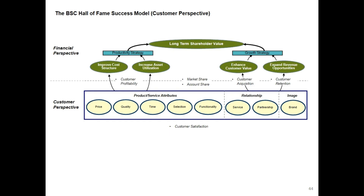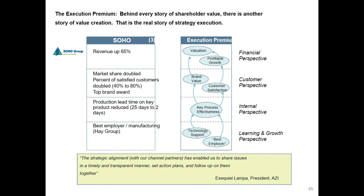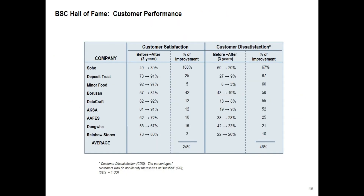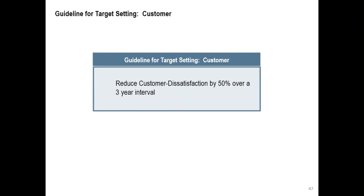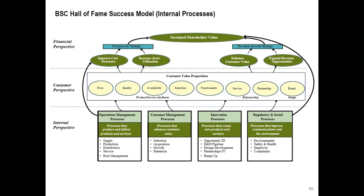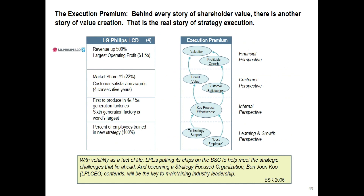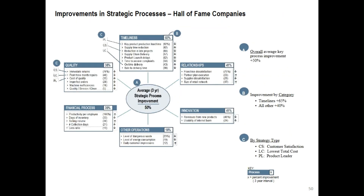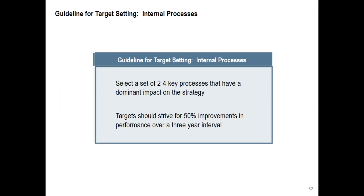Looking at Hall of Fame customer performance and some company examples, the guideline for target setting for customer objectives is: reduce customer dissatisfaction by 50% over a three-year interval. For BSC Hall of Fame success for internal processes, looking at best practice examples: select a set of two to four key processes that have a dominant impact on the strategy, and targets should strive for 50% improvements in performance over a three-year interval.